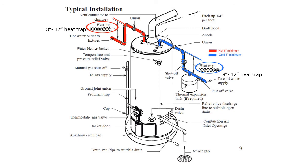Heat traps are valves or loops of pipe installed on the cold water inlet and hot water outlet pipes on water heaters. They allow cold water to flow into the hot water tank but prevent unwanted convection and heated water from flowing out of the tank. Most new water heaters have built-in heat traps.